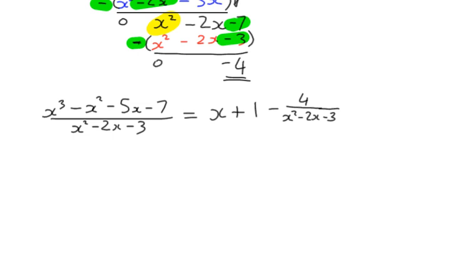Although writing it as minus 4 over the denominator is probably the best final form, I'm going to suggest keeping it as a plus sign with negative 4 in the numerator for now. That way, when we find the partial fractions for that term, we can just slot them on as additions to x plus 1. If we make it a minus sign and work with positive 4, all the partial fraction values would need to be multiplied by negative 1 and you might forget to do that.